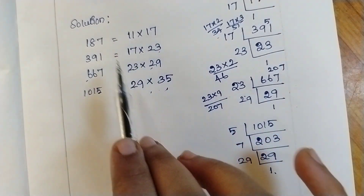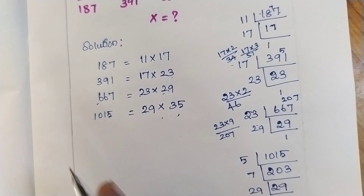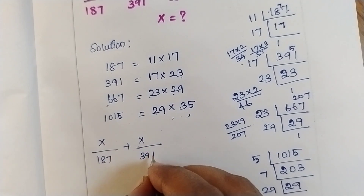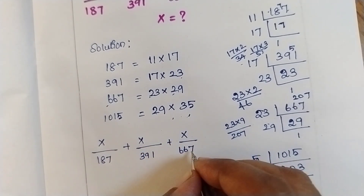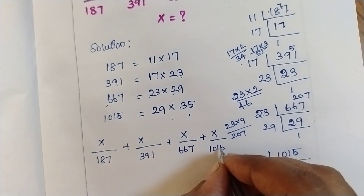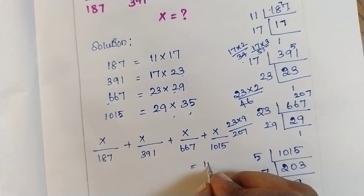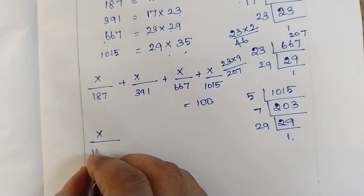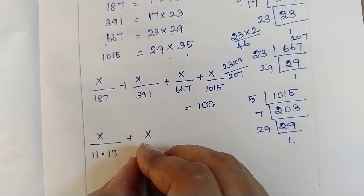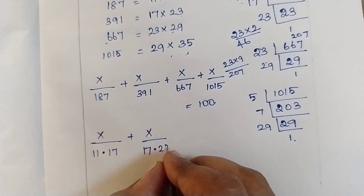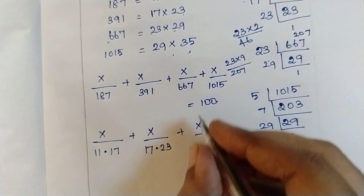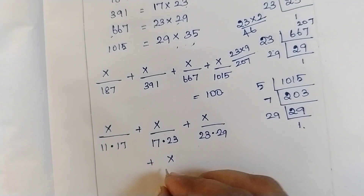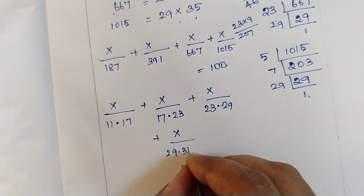So this is in a chain format. Let's apply these values in the question. The question is x/187 + x/391 + x/667 + x/1015 = 100. Now substituting the factored forms: x/(11×17) + x/(17×23) + x/(23×29) + x/(29×35) = 100.